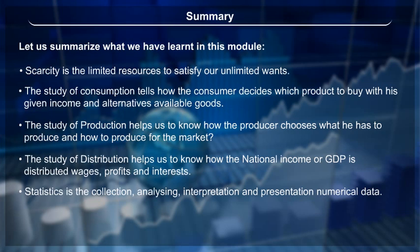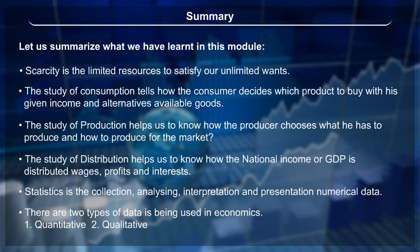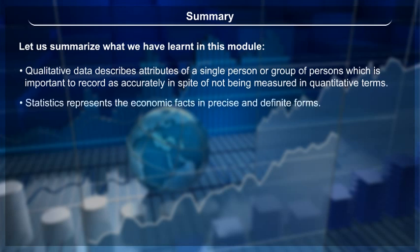There are two types of data used in economics: quantitative and qualitative. Qualitative data describes attributes of a single person or group of persons, which is important to record accurately even though it cannot be measured in quantitative terms. Statistics represents economic facts in precise and definite forms.